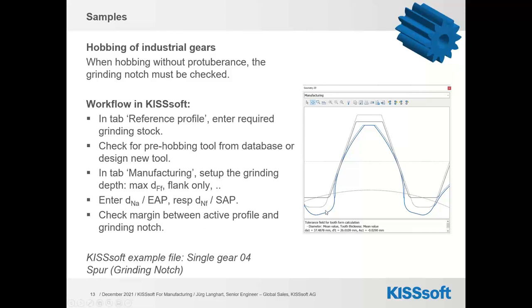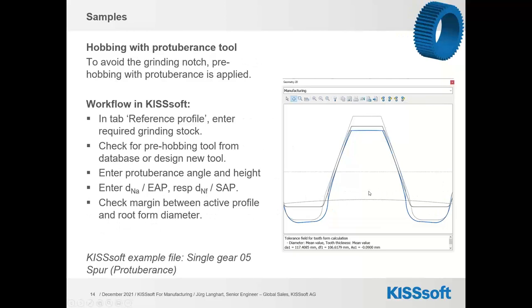For an industrial gear without a protuberance tool, if you do grinding, you will have a grinding notch. In KISSoft you typically want to check the form diameter, and you can enter the start of active profile diameter and check the margin between active profile and grinding notch. When you decide to have a protuberance on a tool, the situation is different — you will avoid the grinding notch. But you want to check where the form diameter is, so you don't lose too much of the active involute. Again you enter the start of active profile from the gear pair calculation and check the margin.